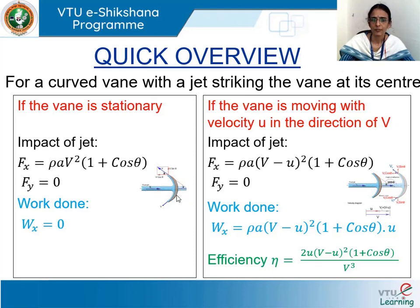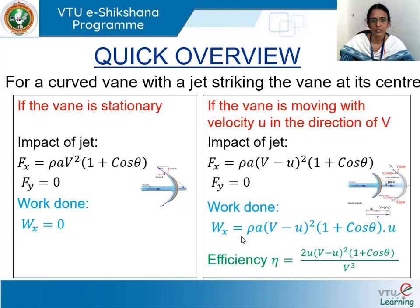Next, we have seen that if the vane is moving with velocity u along the direction of the jet, the impact of jet is given by rho a into v minus u whole square into 1 plus cos theta. The corresponding work done is given by f_x into u, and the efficiency is given by 2u into v minus u whole square into 1 plus cos theta, divided by v cubed.